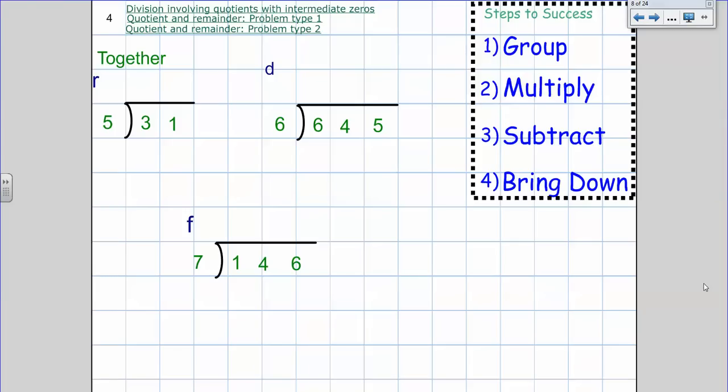Today we're going to look at what happens when I divide and my answer doesn't come out evenly. So what happens when I have a remainder? There are three different ways that we can write a remainder.